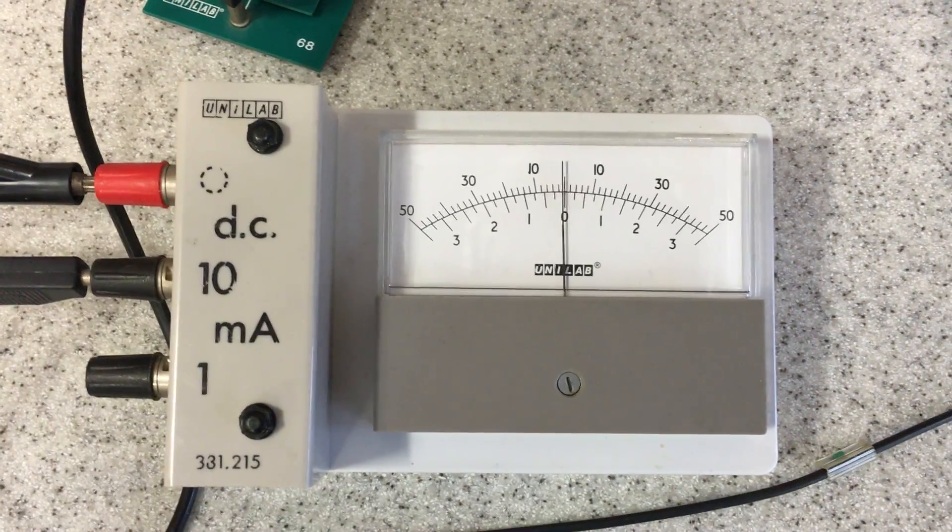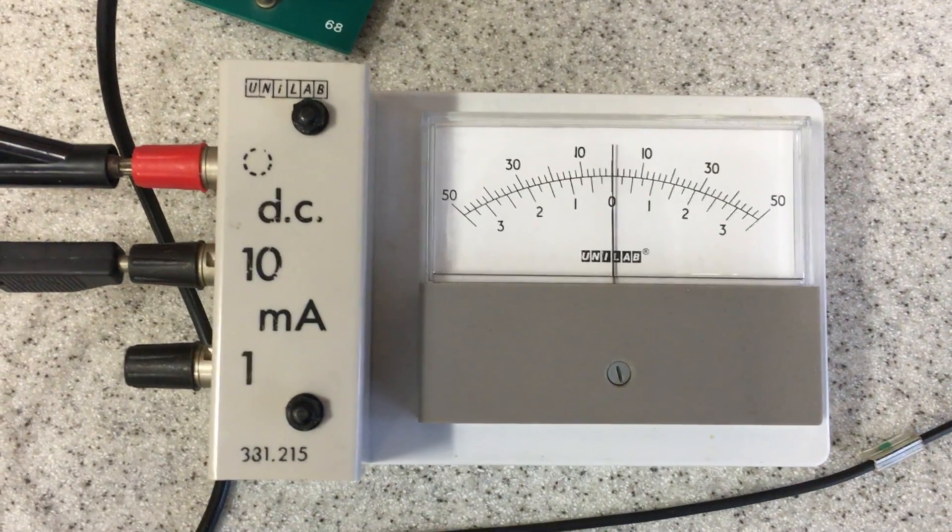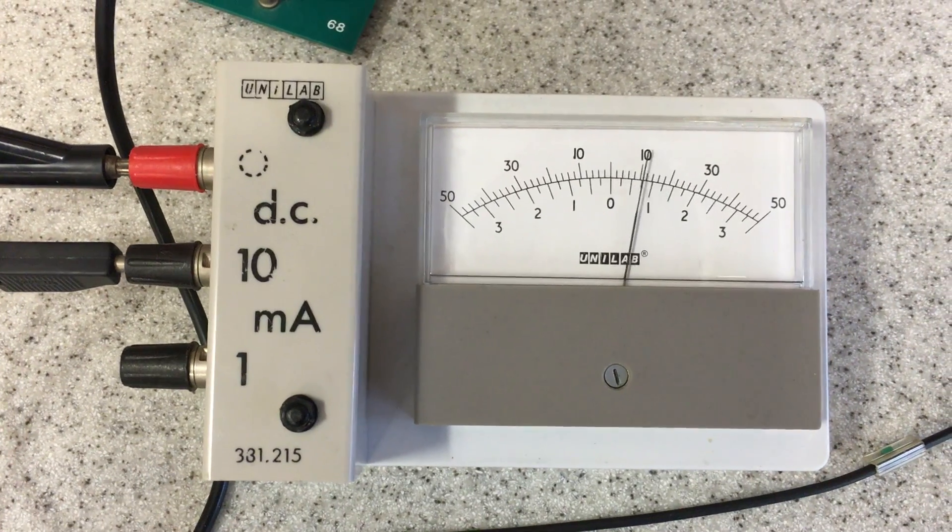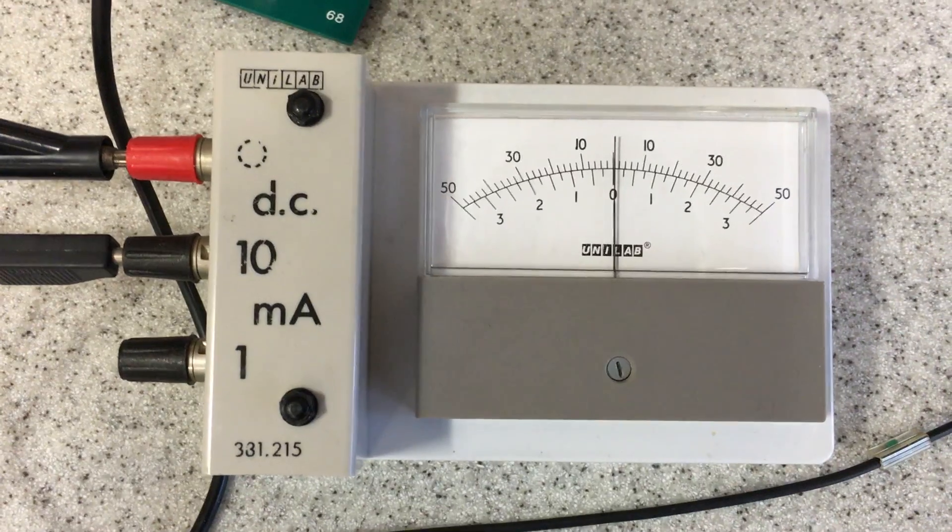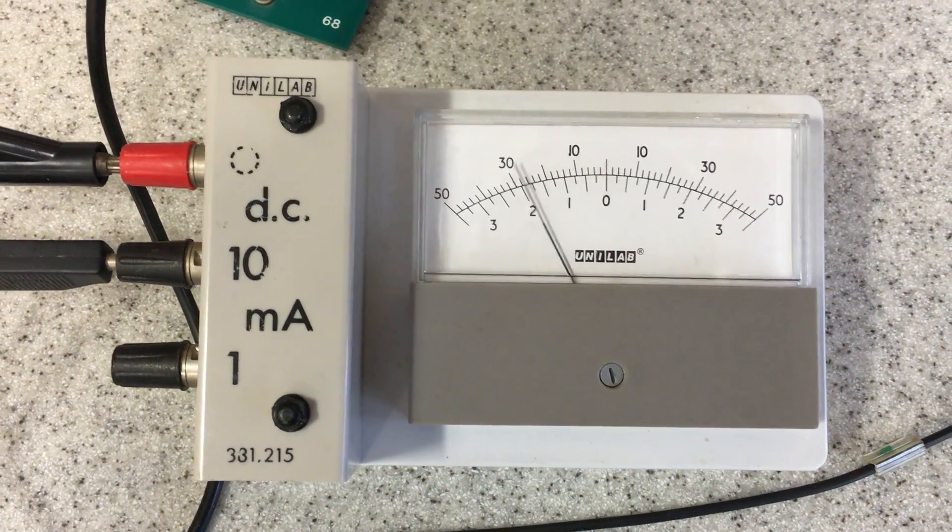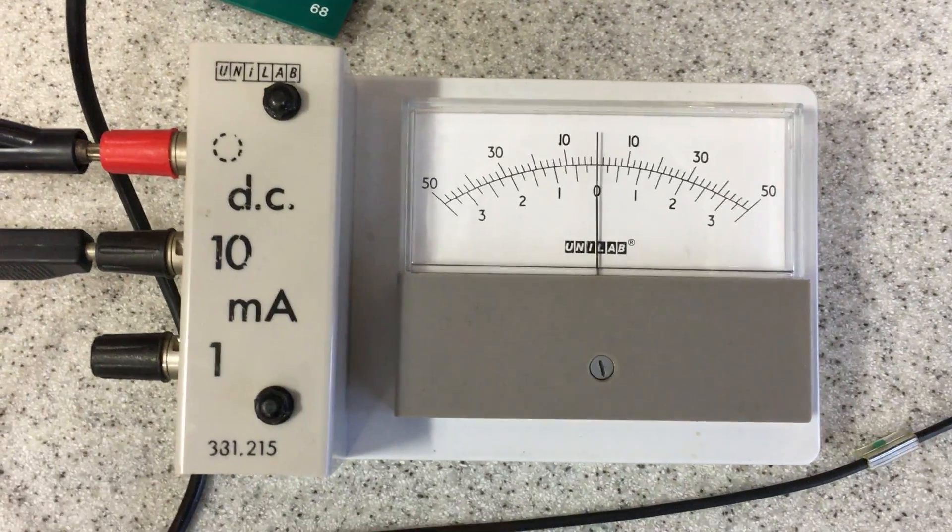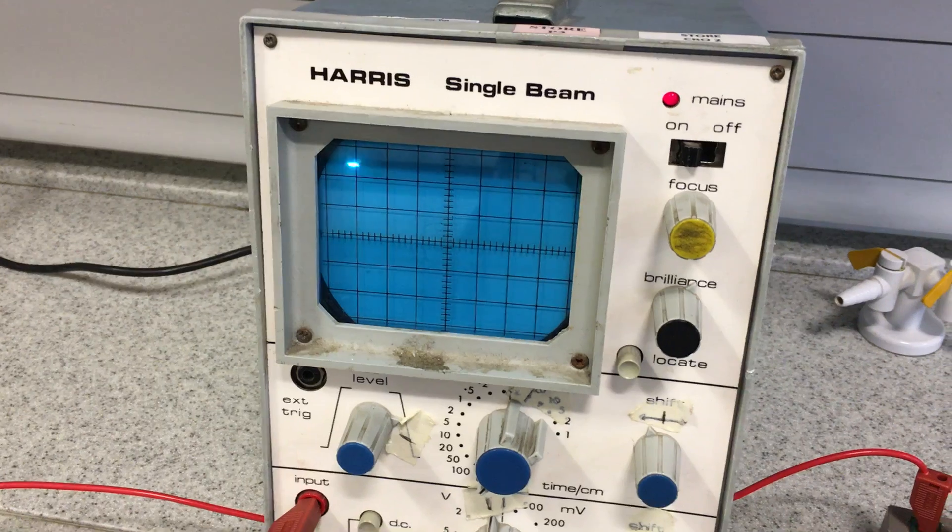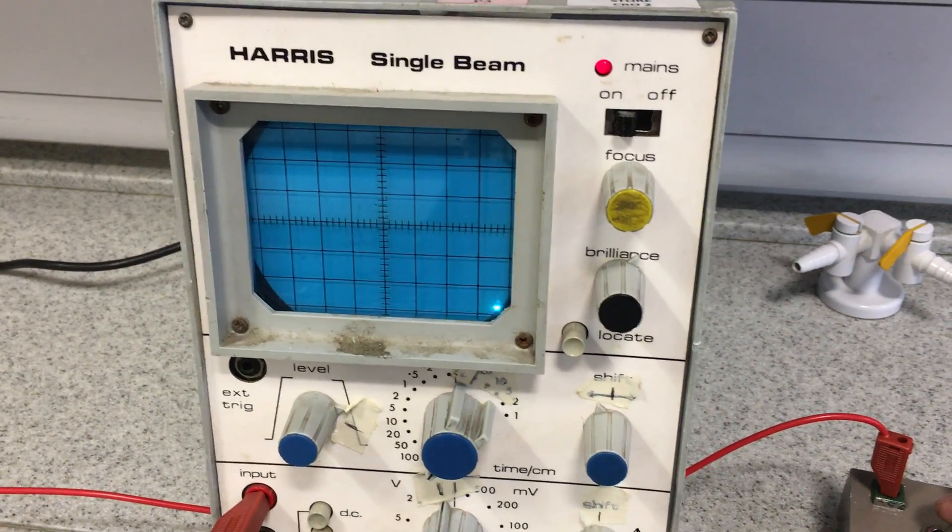So when it's charging, the current is instantly at a maximum and then it gradually falls to zero. Watch. And then when the capacitor discharges, the current flows in the opposite direction. Off the capacitor. Falls to zero again. That's charging and discharging of the capacitor.